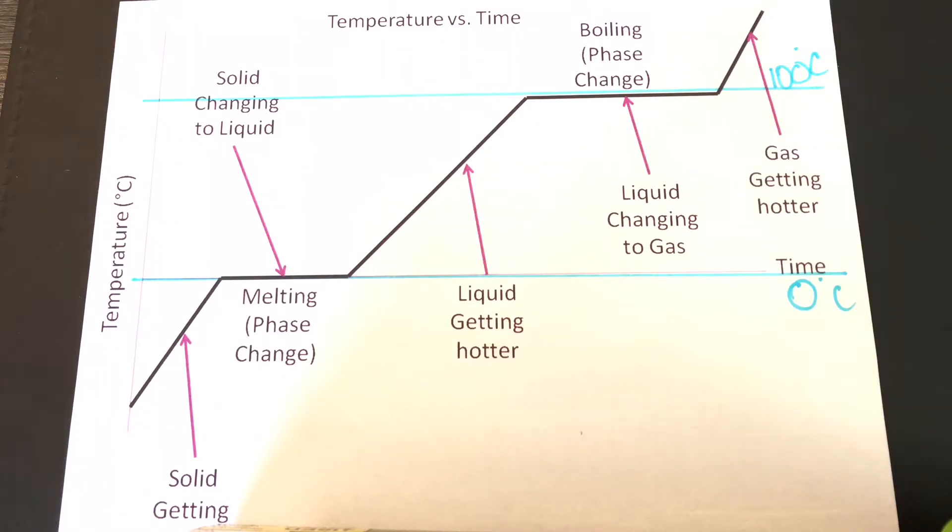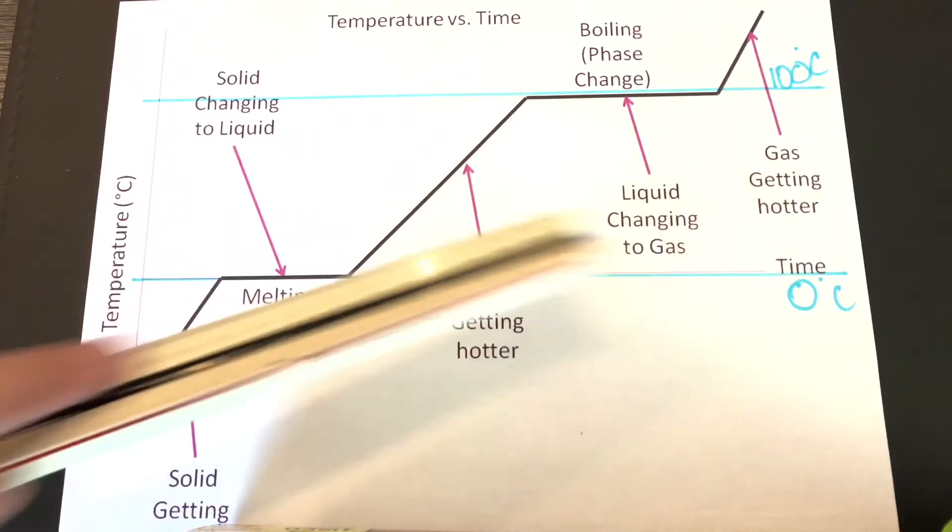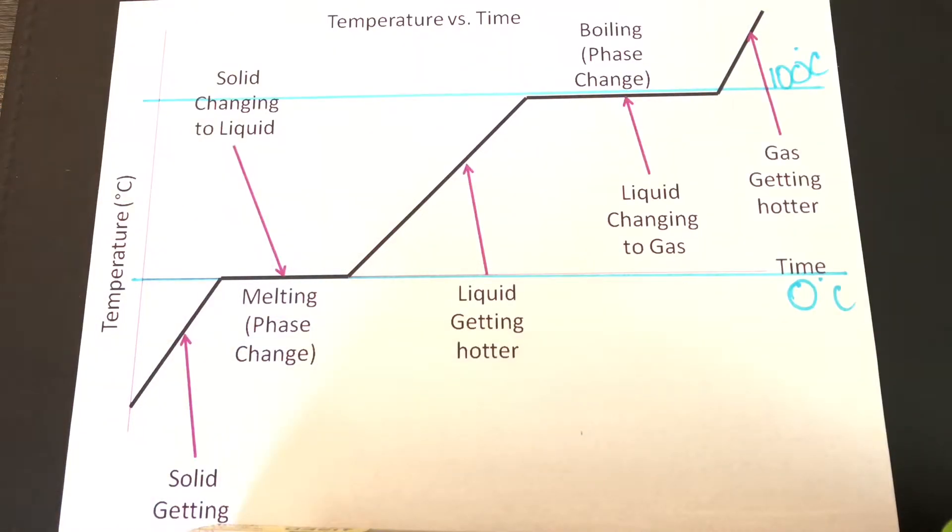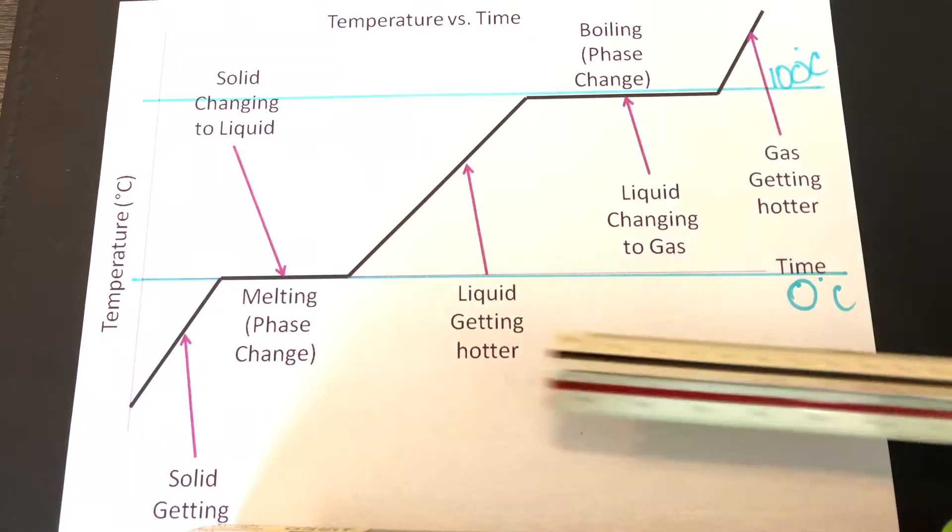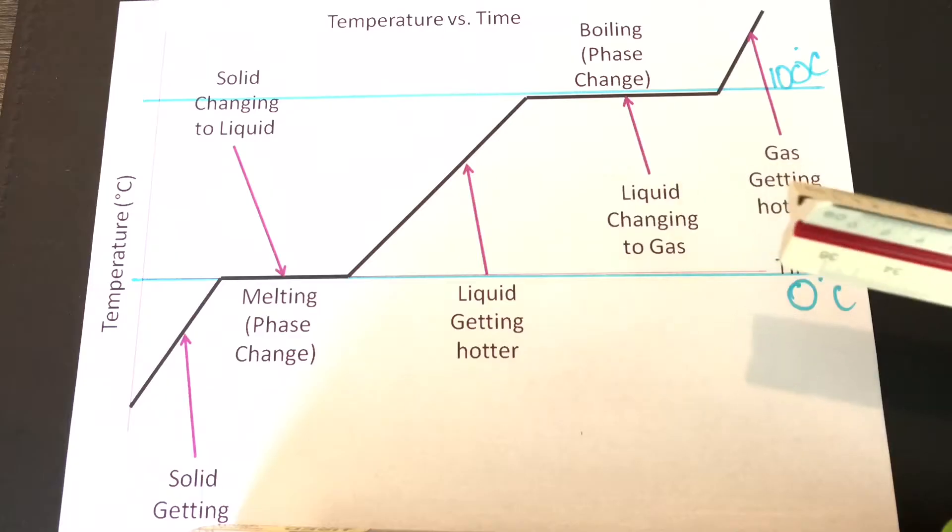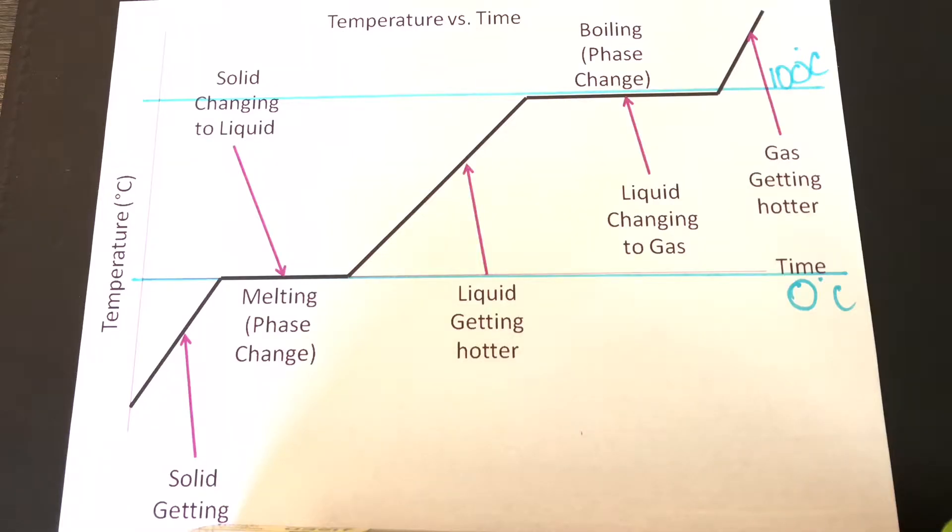First things first, this is a graph, and it's sort of a line graph, right? Simple enough. Let's break it down a little bit further. Over here you notice we have two areas that are going horizontally. We'll call these areas phase changes. Then we have three other areas that are sort of increasing. This is going to be called the heating phases.